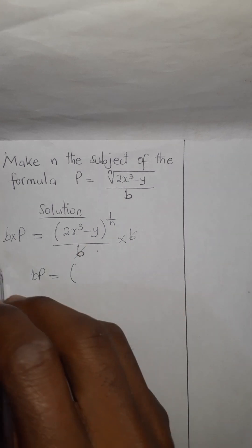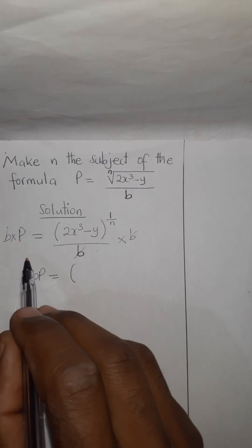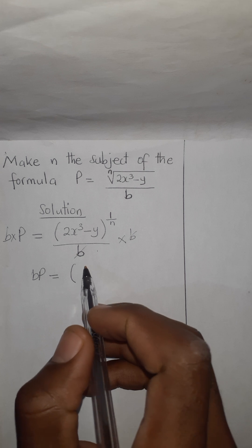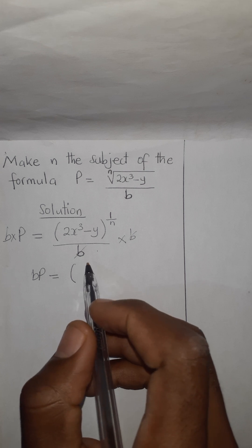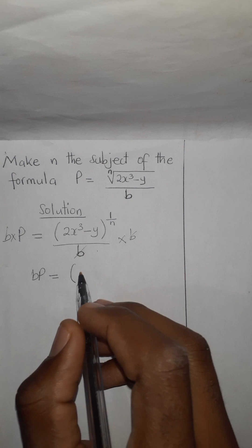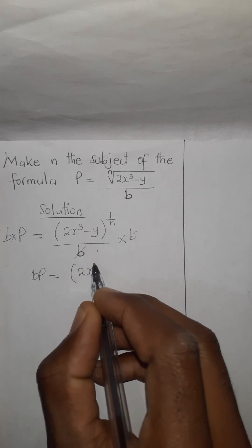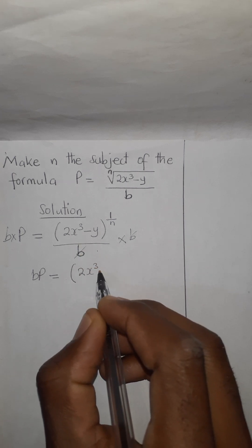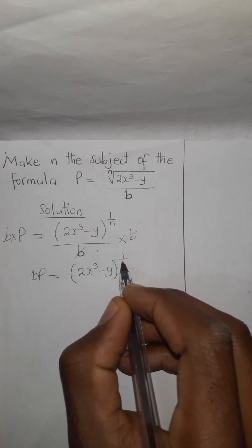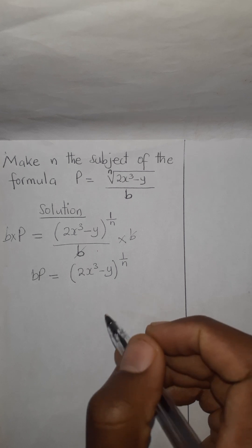Don't take this to cancel this, because this is not on this side. Rather, we cancel the numerator which is in the same line. So we are remaining with the 2x cubic minus y to the power 1 over n. So 1 over n is like n through t.